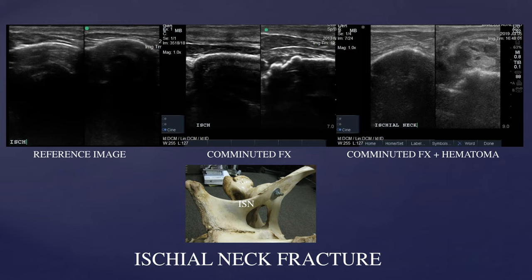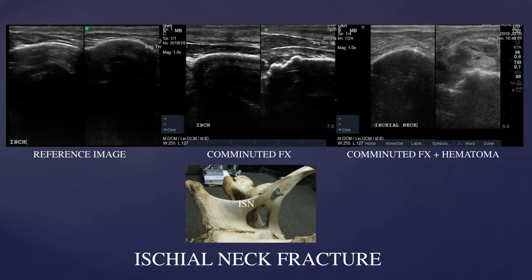Slide four demonstrates fractures of the ischial neck. There are normal reference images of the ischial neck in the top left — just a curved section of bone. The central image shows a normal reference on the left but fracture fragmentation on the right ischial neck. The most right-hand image shows a normal reference of the ischial neck on the left but significant fracture fragmentation on the right, along with a hematoma because of how acute this particular fracture was — caught at the time the hematoma was associated with the fracture fragments.